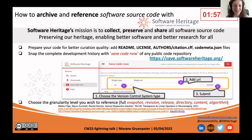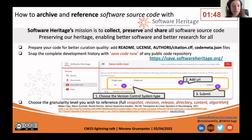Hi, everyone. Today I will guide you how to archive and reference software source code with Software Heritage. If you don't know Software Heritage, it's the Universal Source Code Archive, and its mission is to collect, preserve, and share all software source code, because preserving our heritage is enabling better software and better research for all.